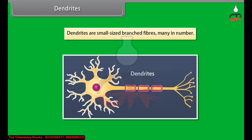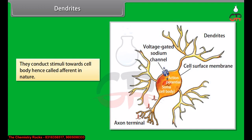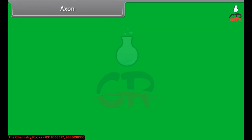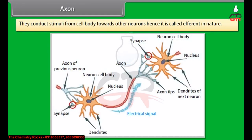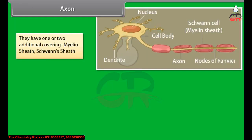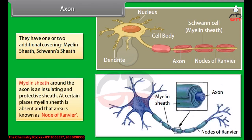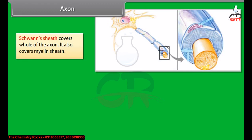Dendrites are small-sized branched fibers, many in number. They conduct stimuli to the cell body, hence called afferent in nature. Axon is the largest fiber in the cell. Axons are long-sized fibers; they are unbranched and only one in number. They conduct stimuli from the cell body towards other neurons, hence called efferent in nature. They have one or two additional coverings: myelin sheath and Schwann sheath. Myelin sheath around the axon is an insulating and protective sheath. At certain places, myelin sheath is absent and that area is known as the node of Ranvier. Schwann sheath covers the whole of the axon and also covers the myelin sheath. Axon bears terminal end fibers which end into synaptic knobs.